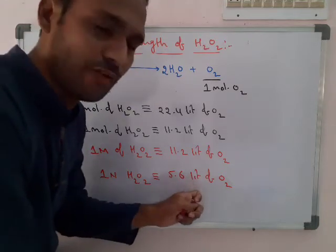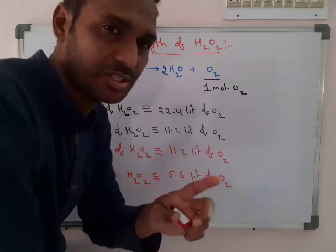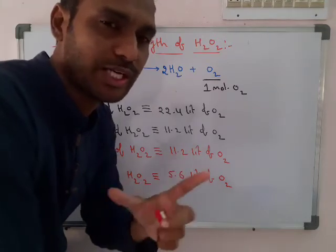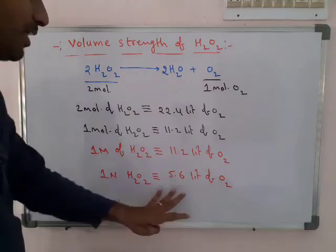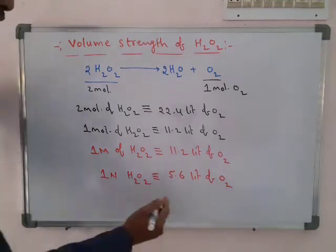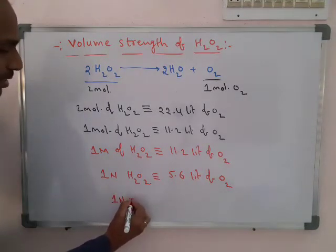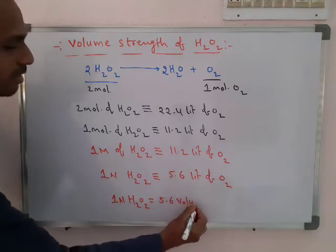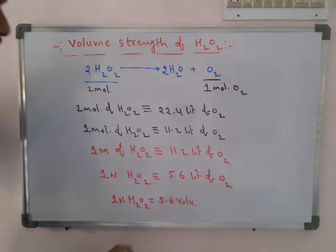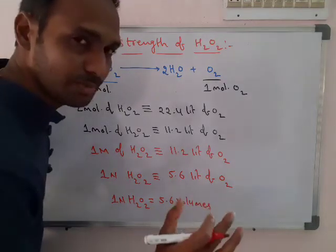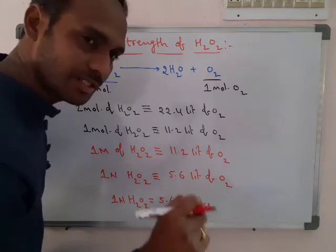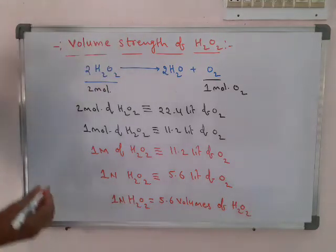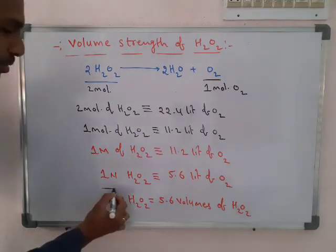Just revise the definition: the volume of oxygen given by one normality hydrogen peroxide solution at STP is 5.6 liters. So one normality of hydrogen peroxide equals 5.6 volume strength. Volume strength is also written as just 'volumes' — 5.6 volumes of hydrogen peroxide. Remember this as the basic formula for hydrogen peroxide volume strength.